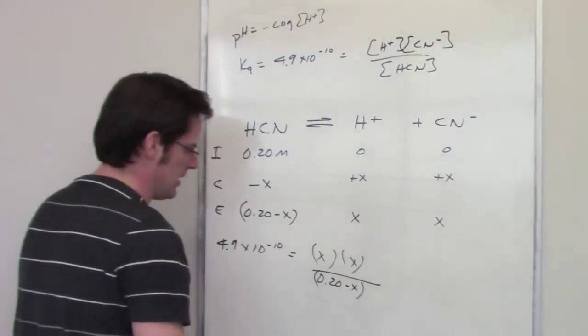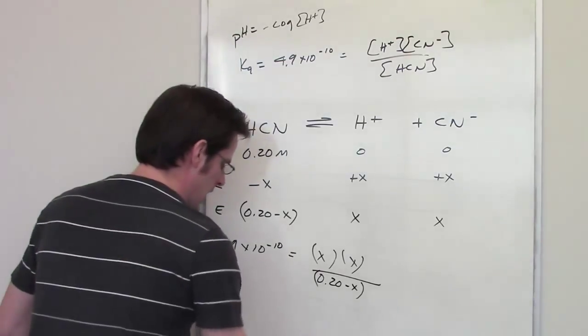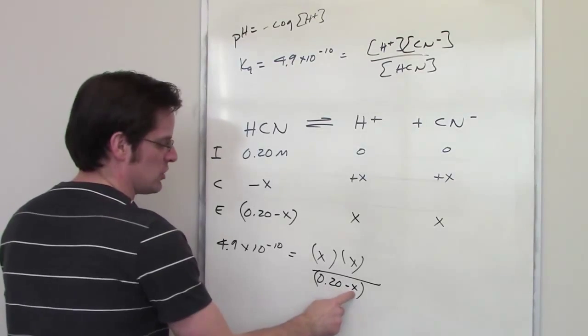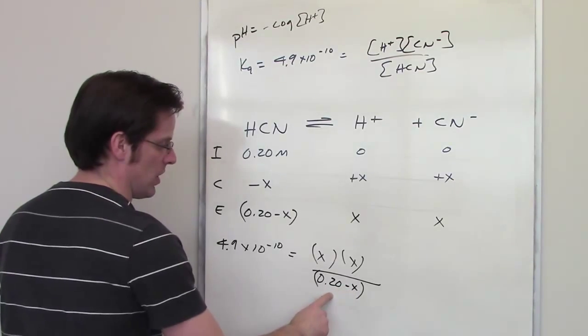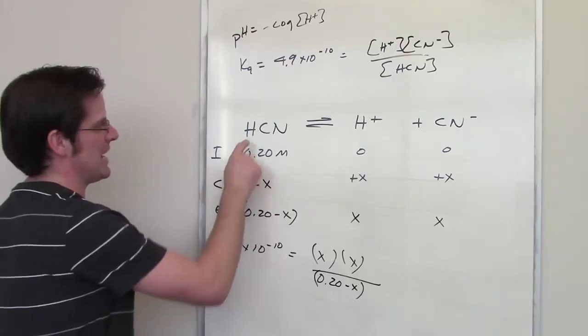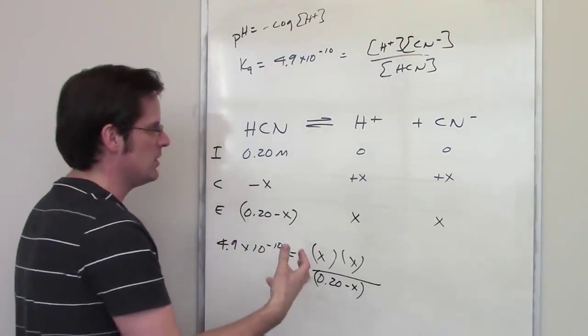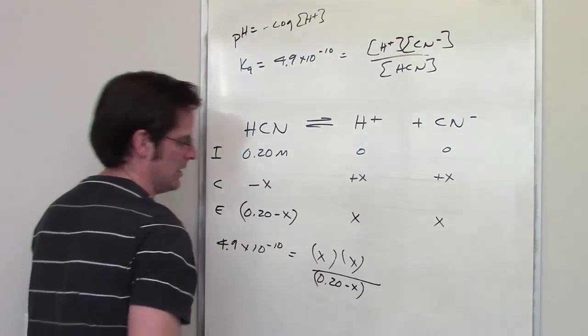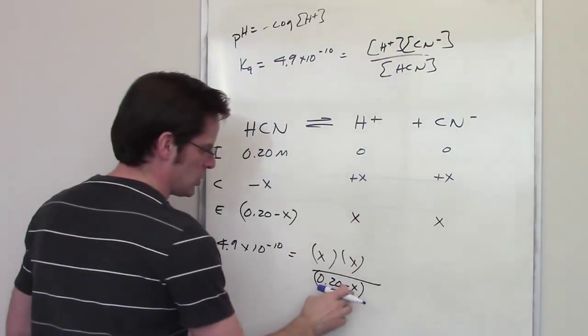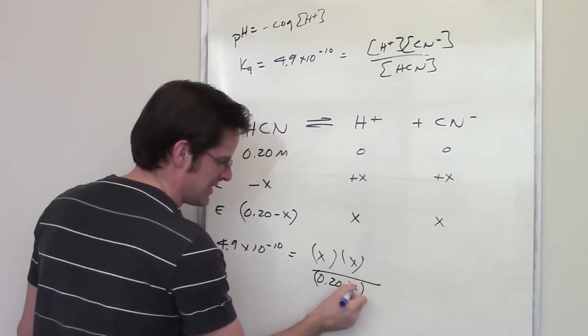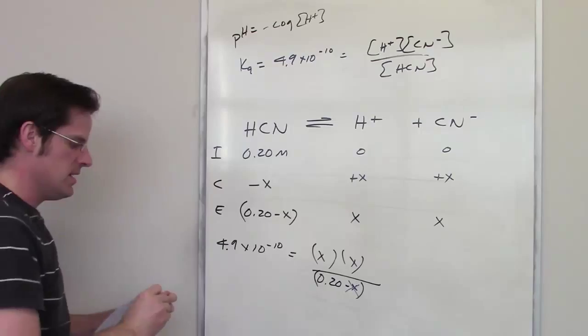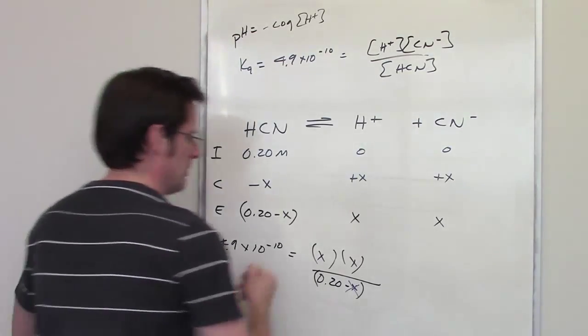Now, as I pointed out in an earlier video, the denominator value x right here is going to be very, very small compared to 0.20. And the reason is because HCN is a weak acid. So you don't get huge amounts of these things compared to HCN. Now, because this number x here is so small compared to 0.20, you can basically cross it off in the denominator and pretend it's not there. That makes the math much simpler.